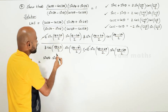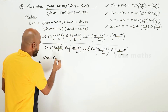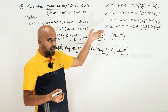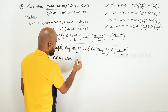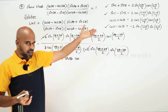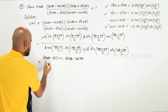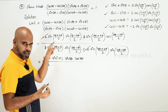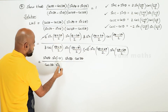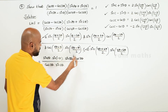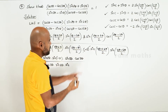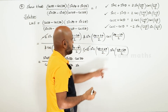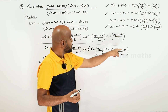Sin (theta minus 3 theta) gives minus 2 theta, divided by 2 gives minus theta. Then 6 theta by 2 gives 3 theta. Divided by cos (6 theta by 2) — 5 theta plus theta gives 6 theta by 2, which is 3 theta — into sin (5 theta minus theta) gives 4 theta, 4 theta by 2 is 2 theta. Sin (4 theta minus 6 theta) gives minus 2 theta by 2, which is minus theta.